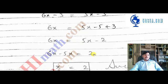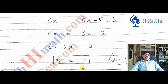Subtracting 5x from both sides, 6x minus 5x equals 2. This simplifies to x equals 2, which is our answer.